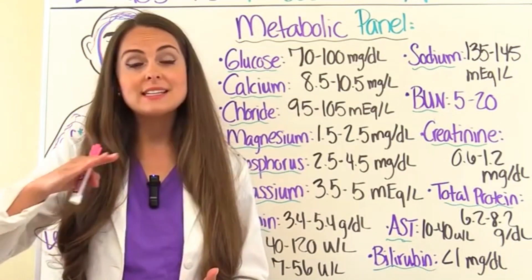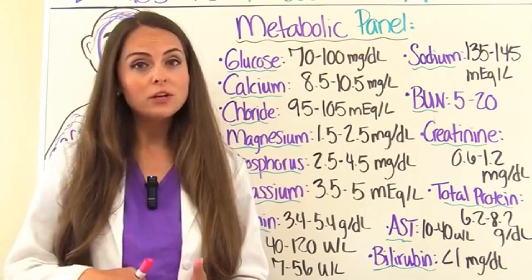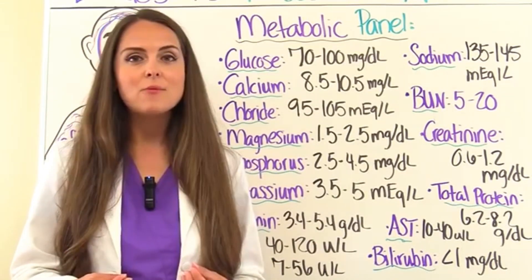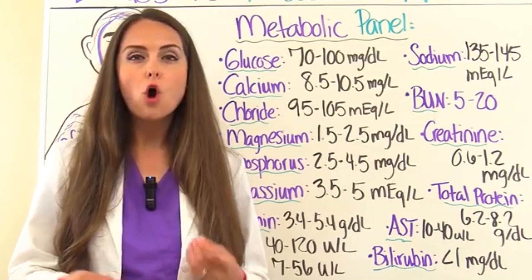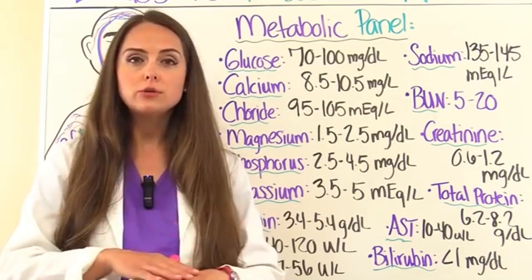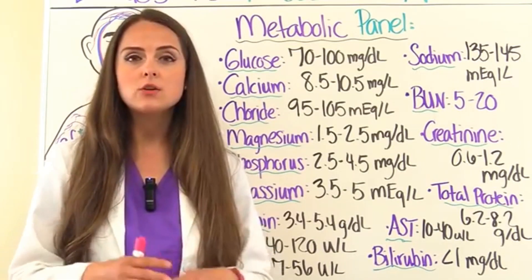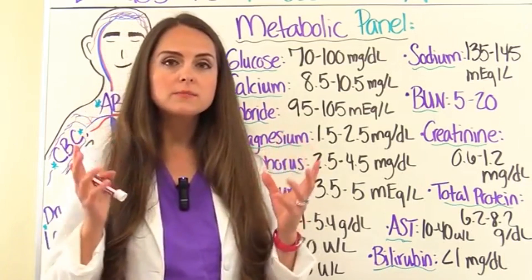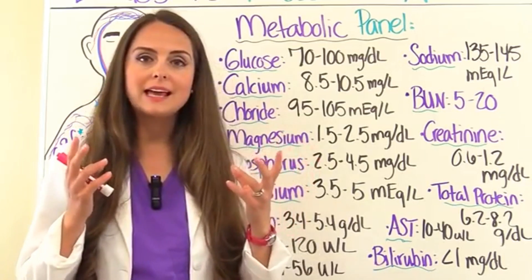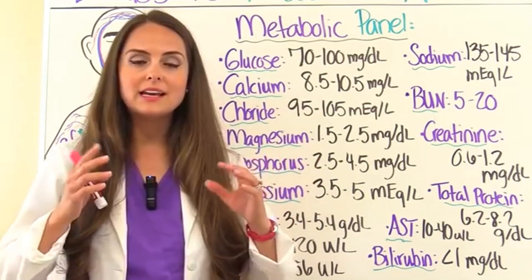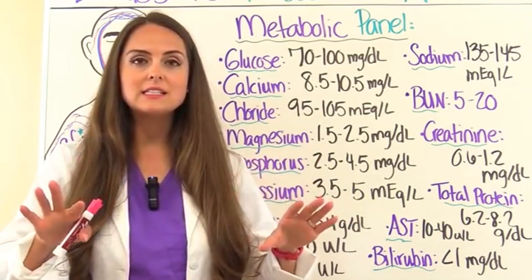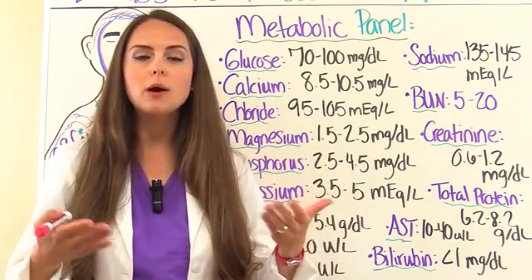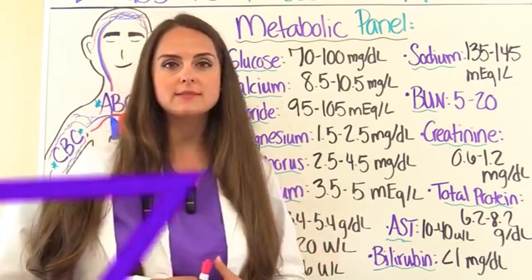If your patient has an elevated bilirubin, you will notice they have an orangish-yellowish hue to their skin or mucous membranes, where bilirubin has collected in the blood and leaked into the skin — giving them that pumpkin-hue appearance.